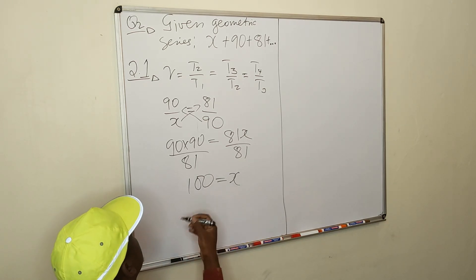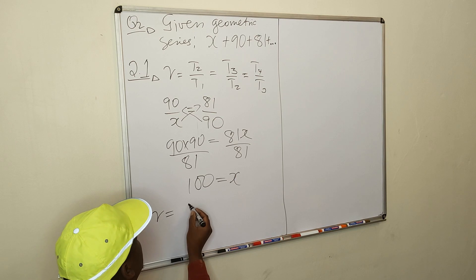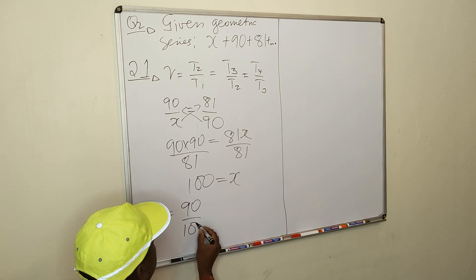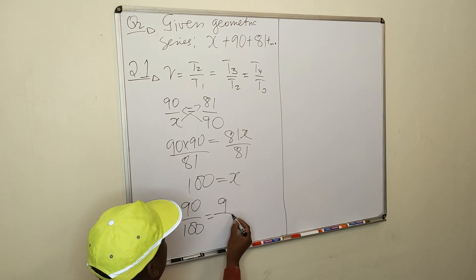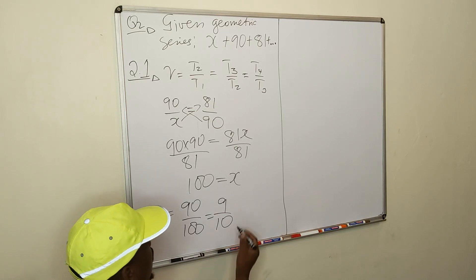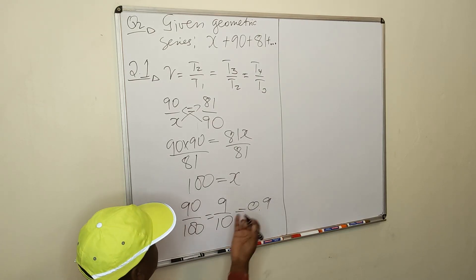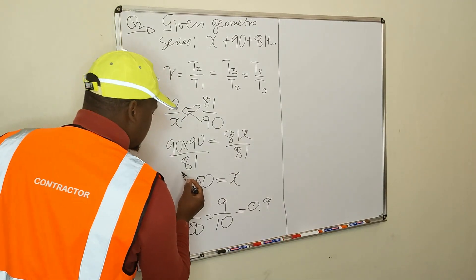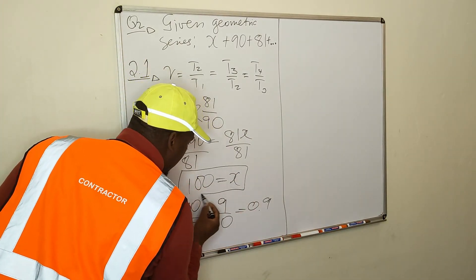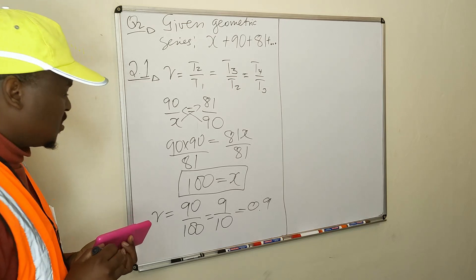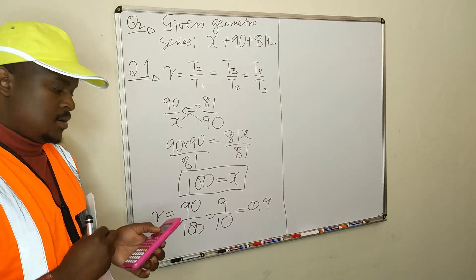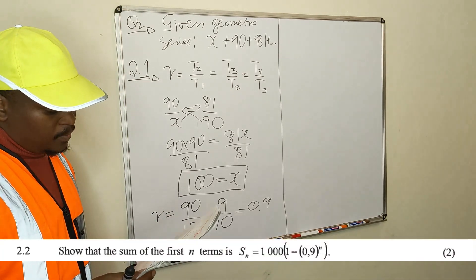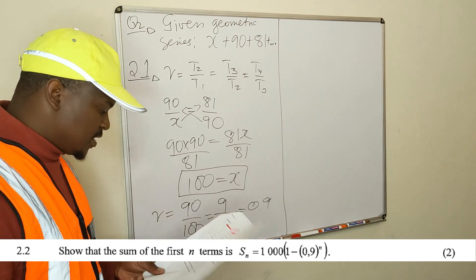Which means your ratio r is equal to 90 over 100, is equal to 9 over 10. So this is the ratio of this series, but you're only asked to find the value of x. x is equal to 100. So let's go to the next question.